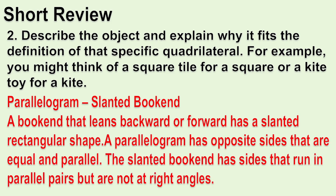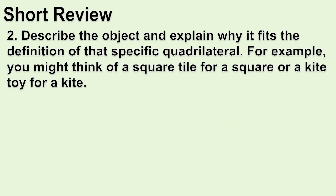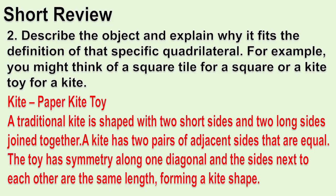Parallelogram — Slanted bookend: A bookend that leans backward or forward has a slanted rectangular shape. A parallelogram has opposite sides that are equal and parallel. The slanted bookend has sides that run in parallel pairs but are not at right angles. Kite — Paper kite toy: A traditional kite is shaped with two short sides and two long sides joined together. A kite has two pairs of adjacent sides that are equal, with symmetry along one diagonal.